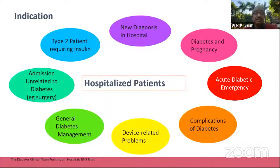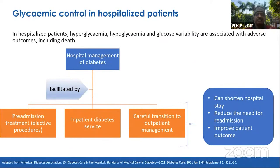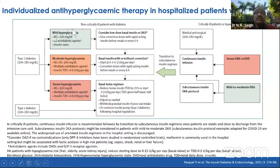The management of hyperglycemia in hospitalized patients is a short-term affair. There are lots of complications and comorbidities. Patients could be in a new diagnosis, or diabetes and pregnancy, or acute diabetic emergencies, device-related problems, general diabetes management, or admission unrelated to diabetes like surgery. For type 2 patients in such conditions, only insulin should be given. Starting insulin in hospital reduces the hospital stay, reduces the need for readmission, and improves patient outcomes.